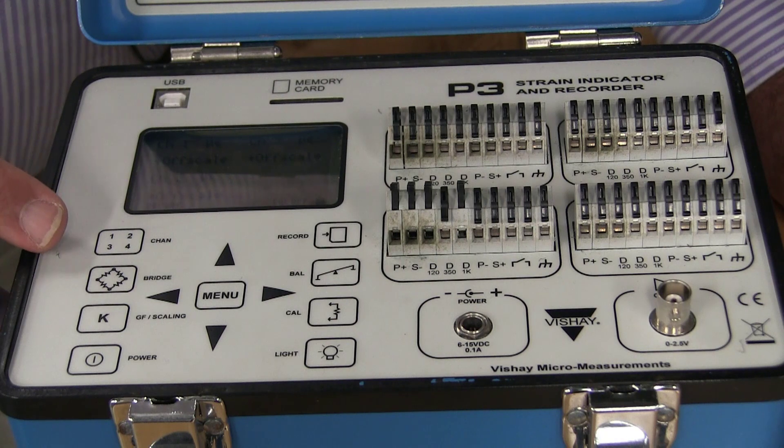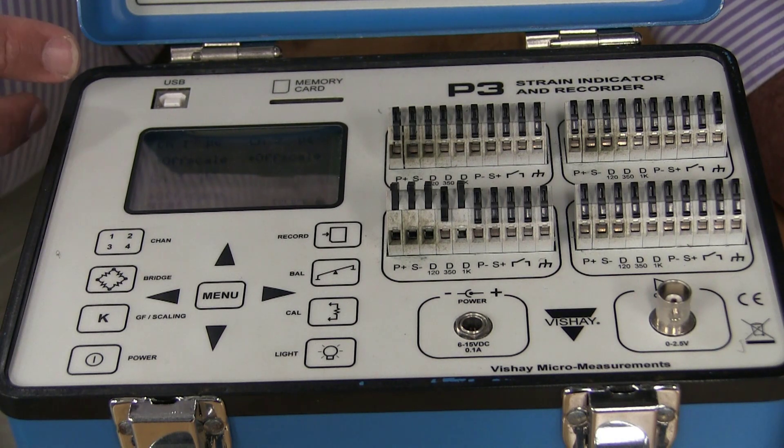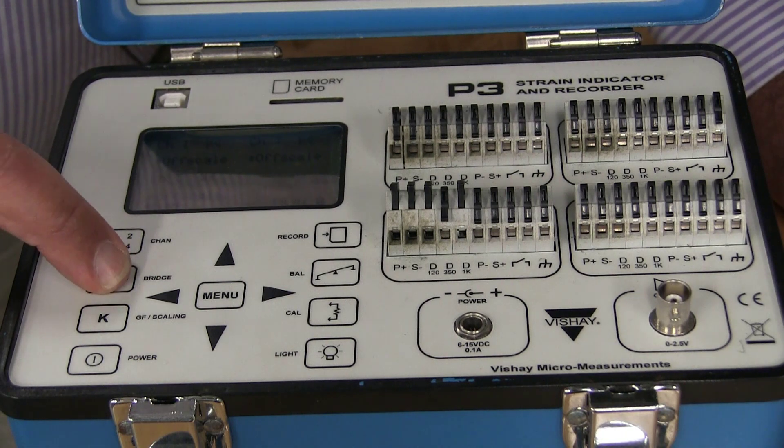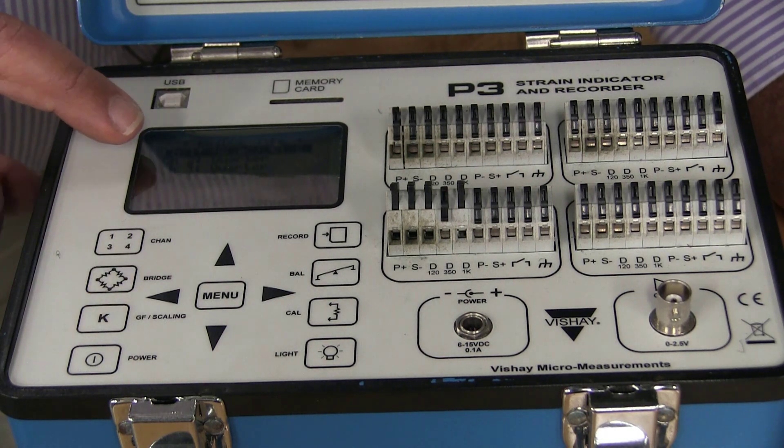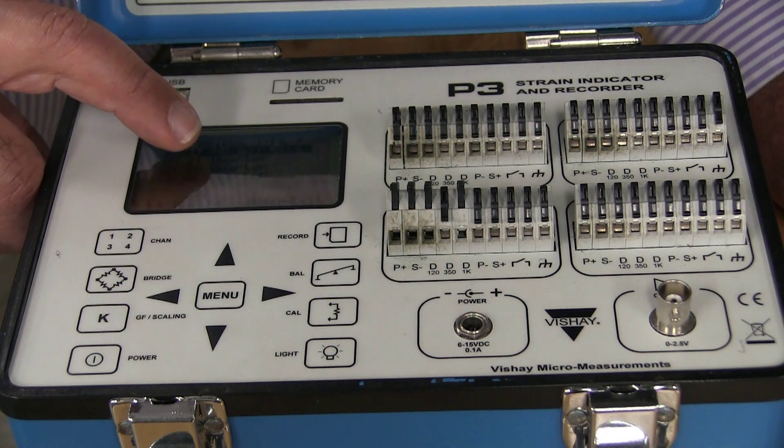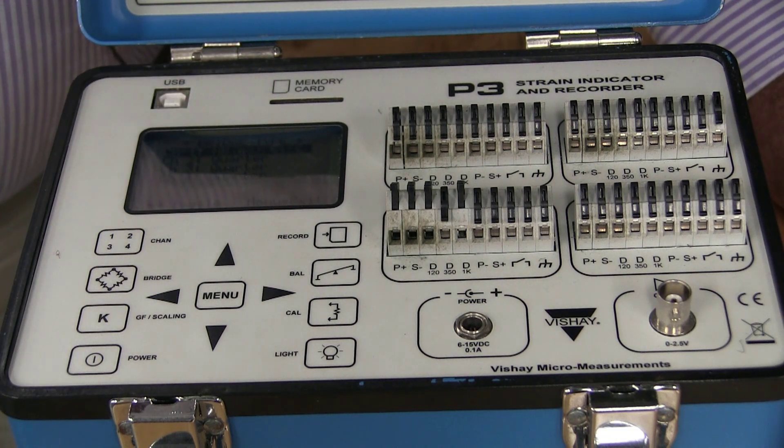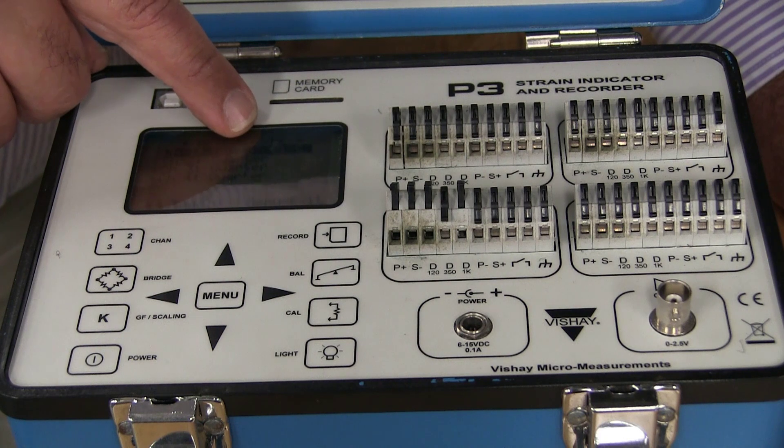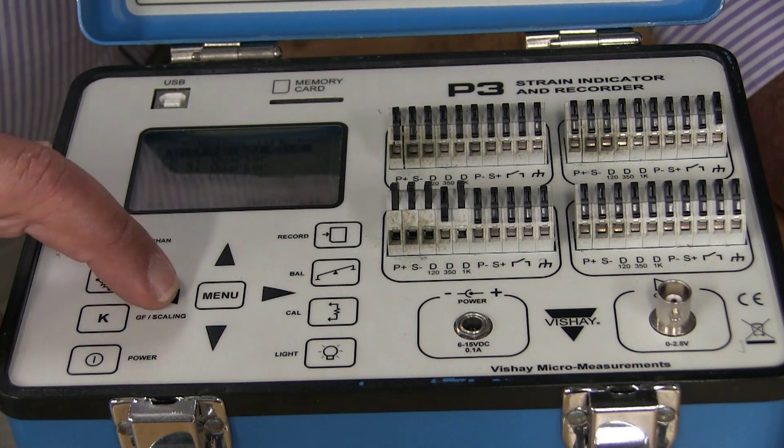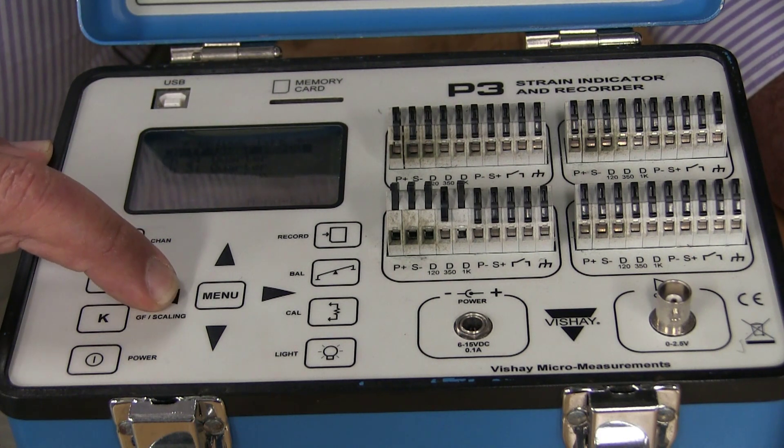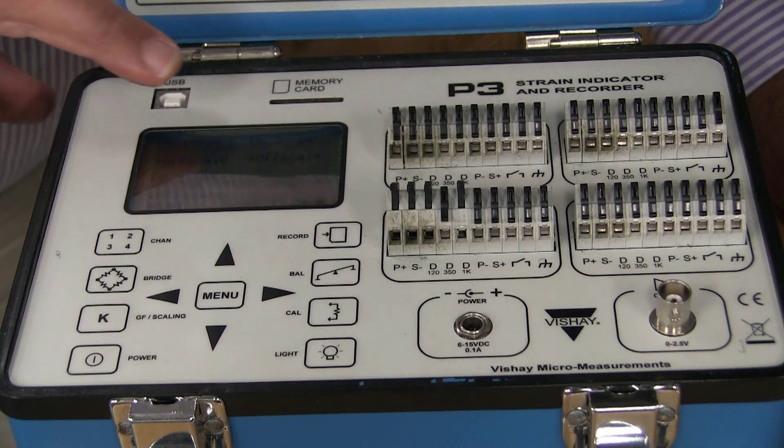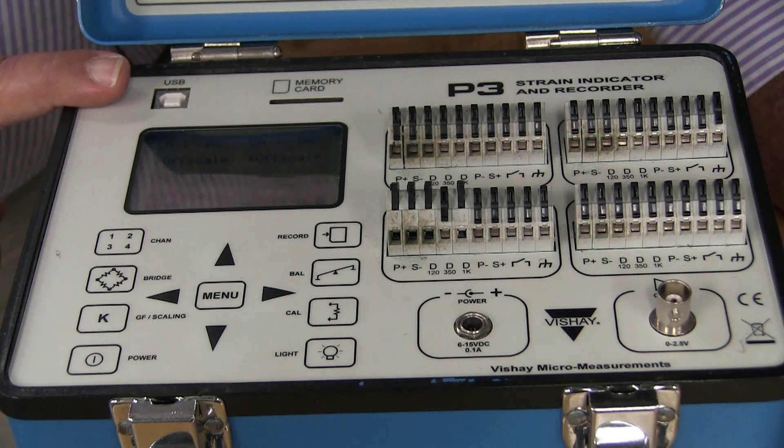Next thing I want to do is I want to make sure that they all have the appropriate bridge configuration, so I push the button that says bridge on it, and you can see channels two, three, and four are set to quarter bridge. Quarter bridge is what we want. Channel one, however, is set to half bridge adjacent, so I'm going to change the bridge configuration for channel one until it reads quarter bridge. Push menu to pop back up, and now they're all three set for quarter bridge.